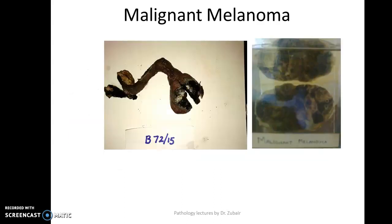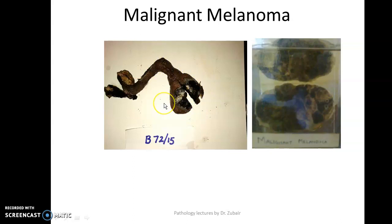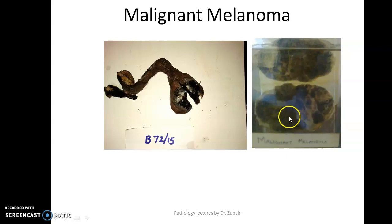The third specimen is a tumor of skin — malignant melanoma. You will say this is a specimen of skin that looks elliptical or irregular. It is an irregular skin specimen having a pigmented nodular lesion. These are two different specimens, by the way. On the cut surface, there are satellite nodules — one nodule here, another here. So satellite lesions are present.